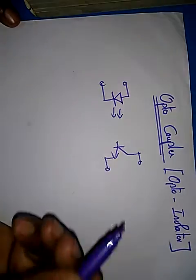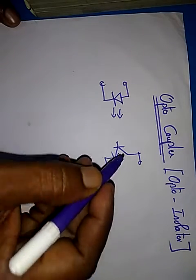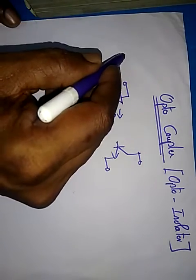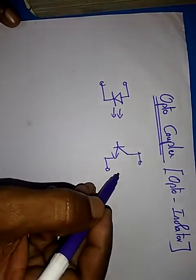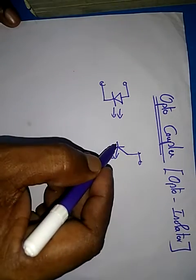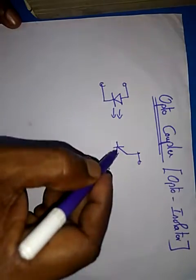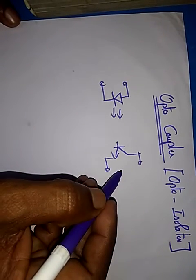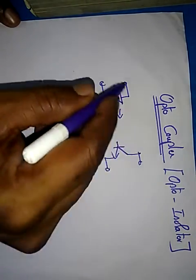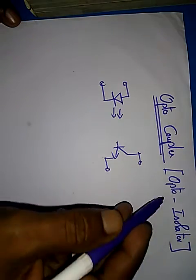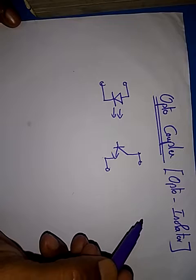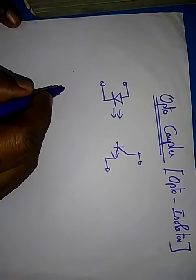This is basically a photo transistor. So now this side you have one circuit and this side another circuit. These two circuits are connected only through light, so you will get very good isolation. This is called opto coupler or opto isolator.